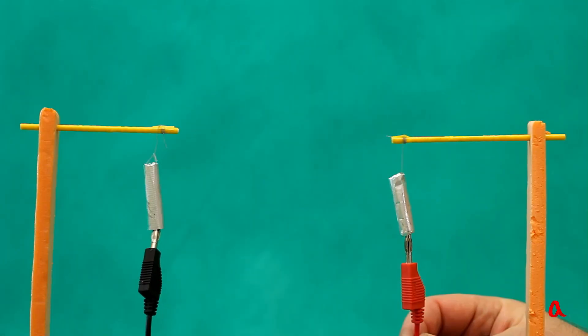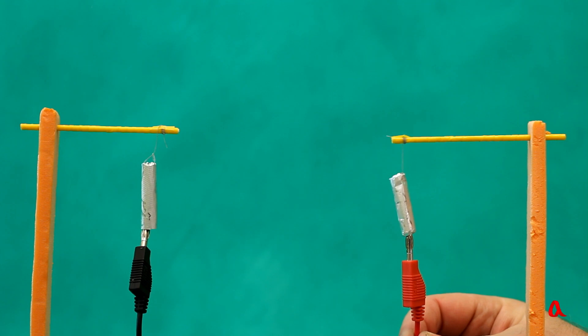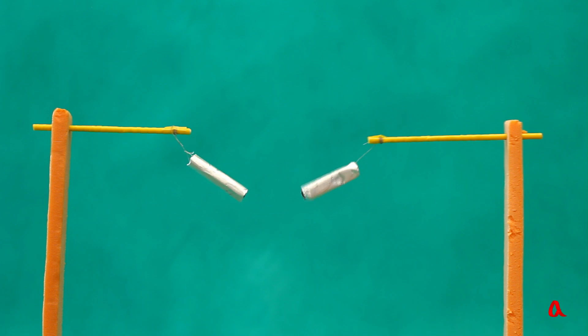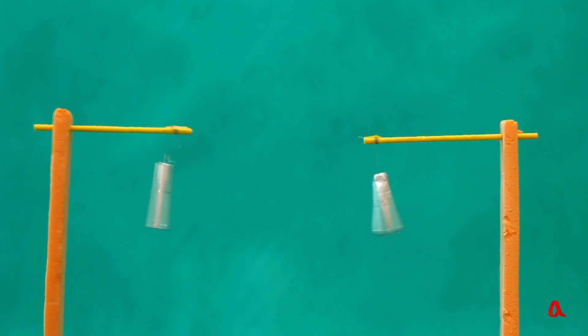And now let us move the two collets apart and charge one of them from the black and the other from the red cable. When brought close together they are attracted to each other.